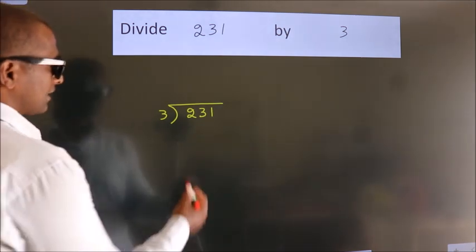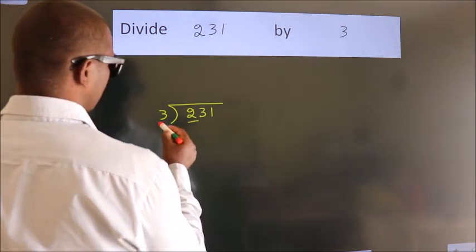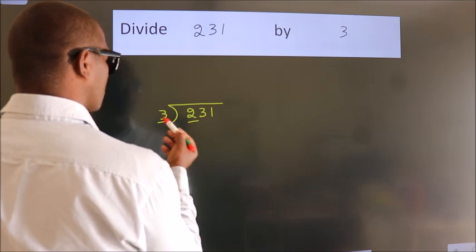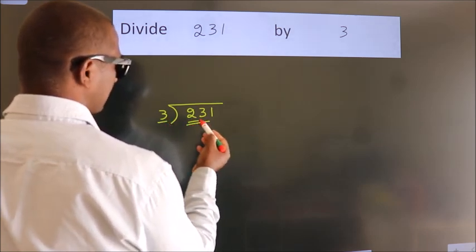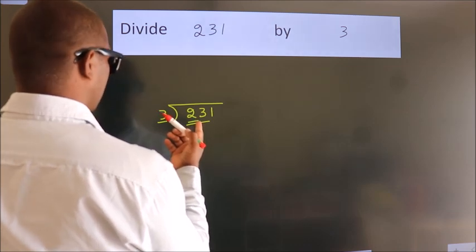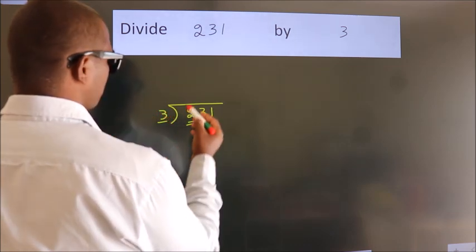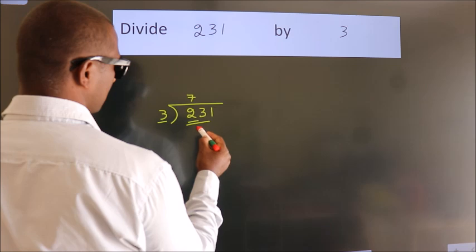Next, here we have 2, here 3. 2 smaller than 3, so we should take 2 numbers, 23. A number close to 23 in 3 table is 3 7s, 21.